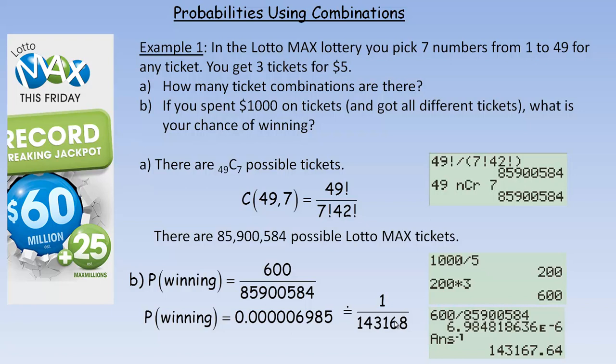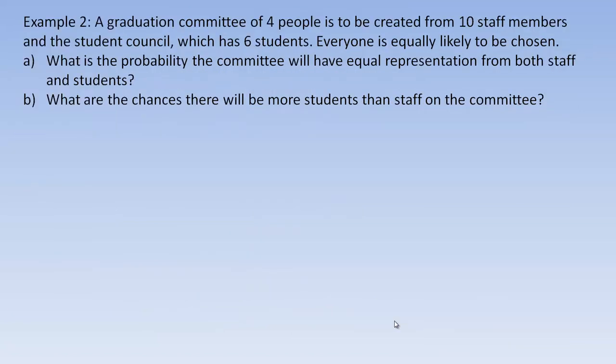Even though you spend $1,000, you still don't have much of a chance to win. One more example using combinations to calculate some probabilities. In this example, a graduation committee of 4 people is to be created from 10 staff members at this school and the student council, which has 6 students.